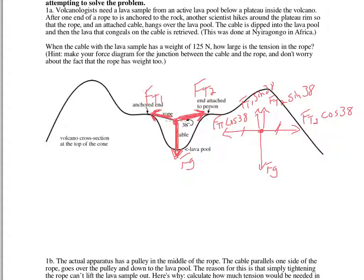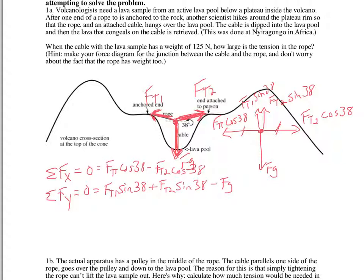For the equations, my x equation has Ft1 cosine 38 and Ft2 cosine 38 — they cancel each other out. In the y direction, calling up positive, I have my two sine components adding up and then gravity going down. In both cases, the net force is zero.